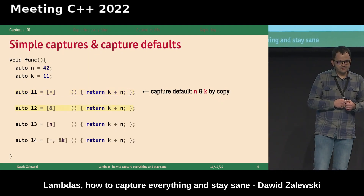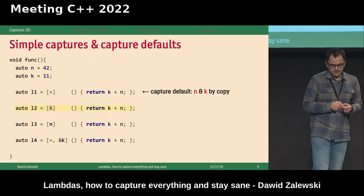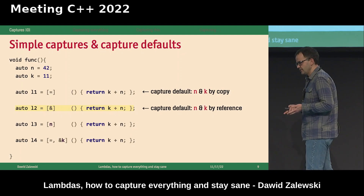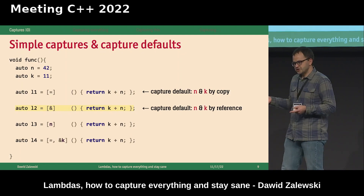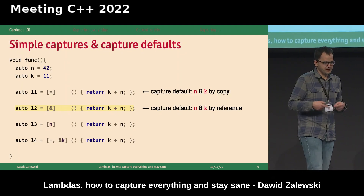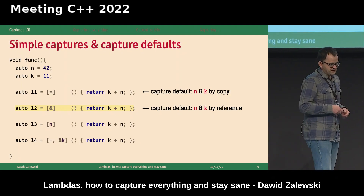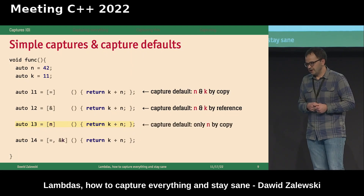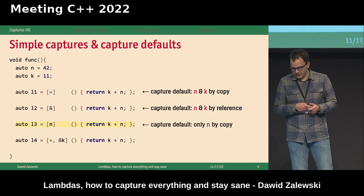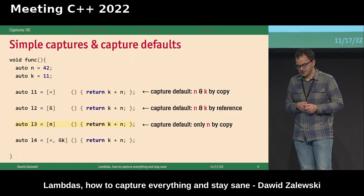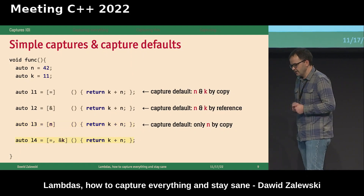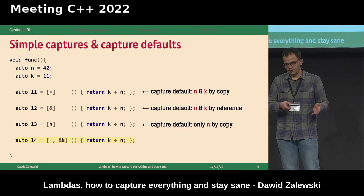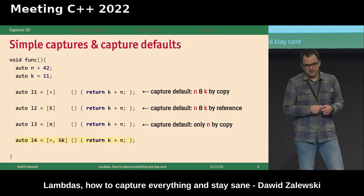You can also mix capture modes: specify that some variables should be captured by reference, like K in this case, and everything else should be copied. That's the mix of a capture default with a simple capture. Are there other captures? Yes — there are generalist captures, also known as init captures, introduced in C++14. They come in many different flavors. The generalist is that you introduce a new variable into your Lambda, like a reference M referring to the original variable answer, or you can introduce a new variable initialized with the value returned by a function call in the init capture.